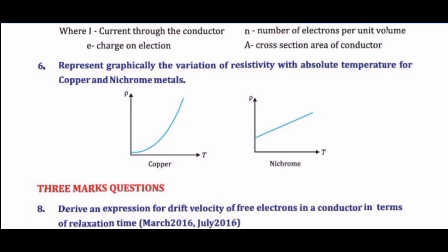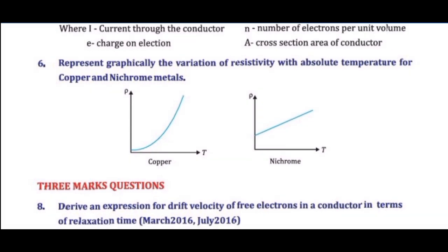For copper, resistivity increases sharply with temperature. For nichrome, resistivity increases slowly with temperature. A graph should be drawn showing this behavior.